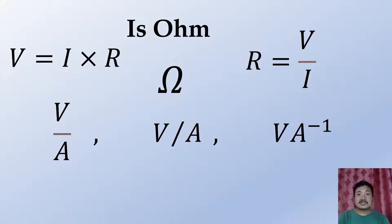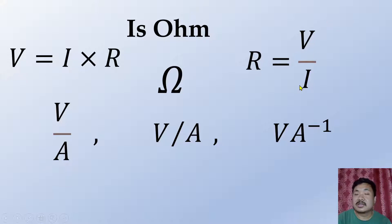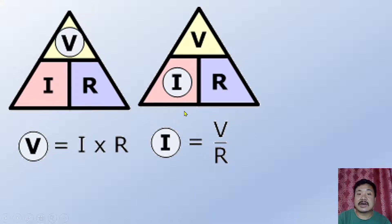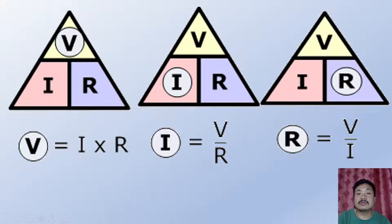Now, to remember Ohm's law formula, use the triangle method. Write V = IR in a triangle. To find R, cover R: R = V divided by I. To find I, cover I: I = V divided by R. So the three forms are V = IR, R = V/I, and I = V/R.